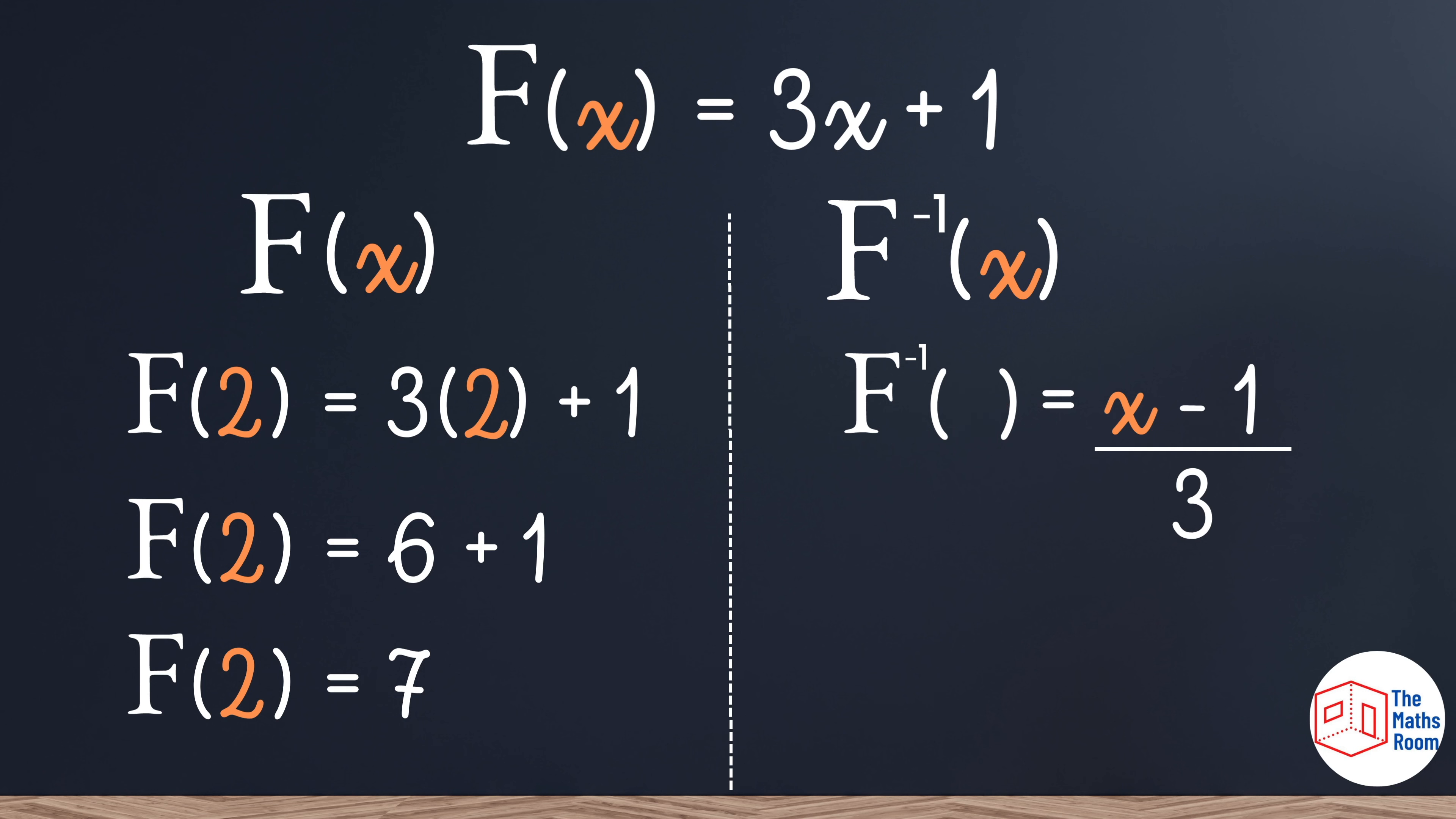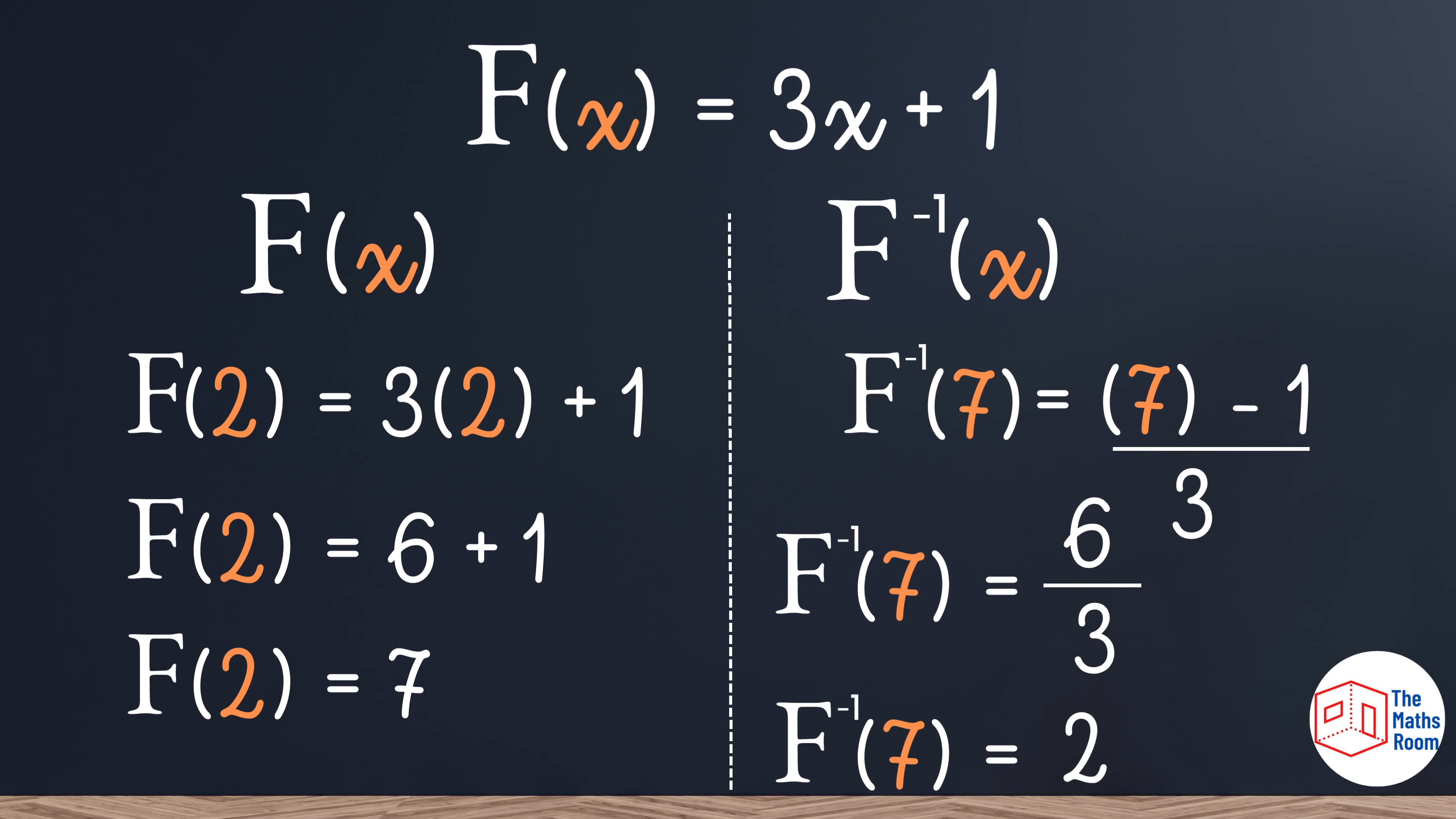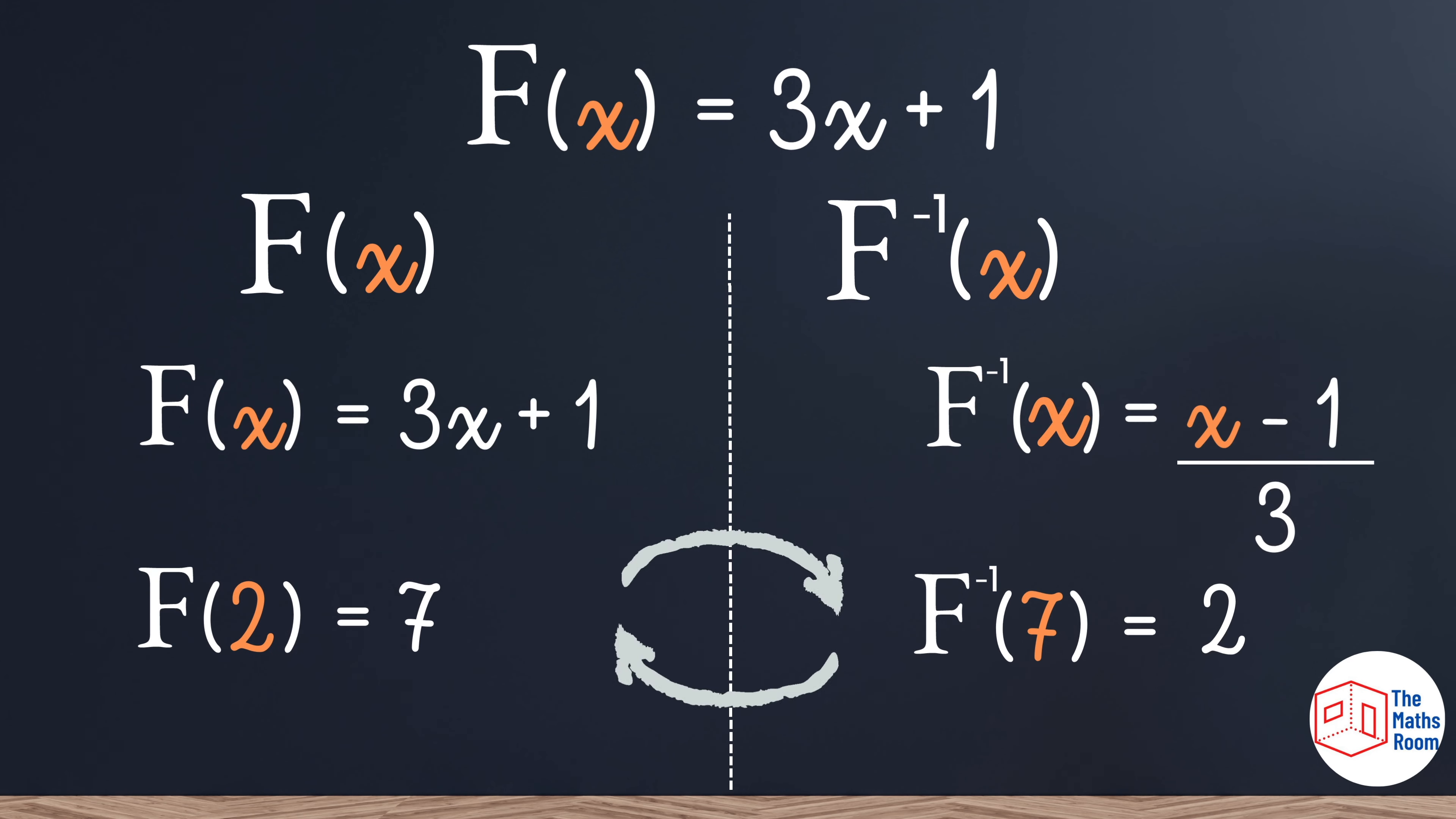Now if I take that output and I substitute it into my inverse function watch what happens. Breaking open my x inserting my 7. 7 minus 1 I'm going to do the top first becomes 6. 6 divided by 3 results in 2. So you can see they are inverse. One input will result in an output which then would result in the original input.